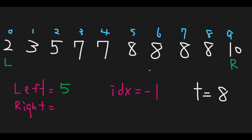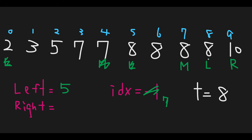Now let's find the most right 8. I initialize everything: left pointer is 0, right pointer is 9, and index is -1. Target is 8. 0 + 9 divided by 2 is 4, so the middle pointer is 4. The value at index 4 is not 8, so the left pointer moves to middle plus 1. Then 5 + 9 = 14 divided by 2 is 7, so the middle pointer is 7. We find 8, so we update the index number with 7. But we need to find the most right 8, so we move the left pointer to middle plus 1.